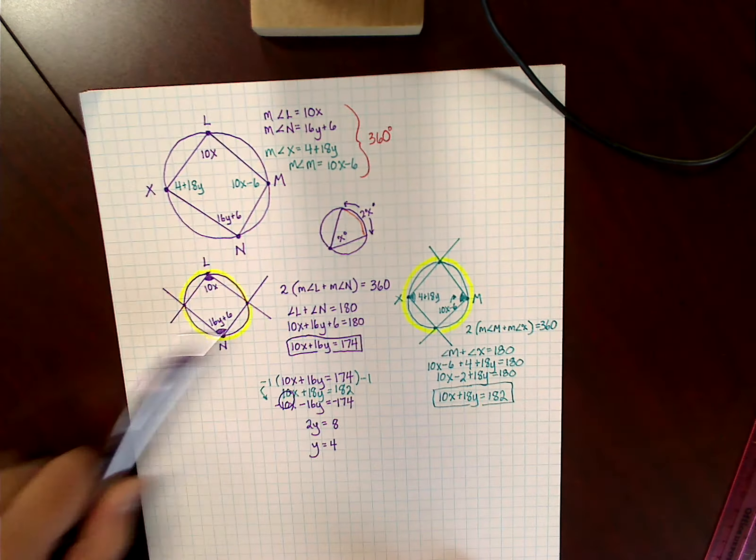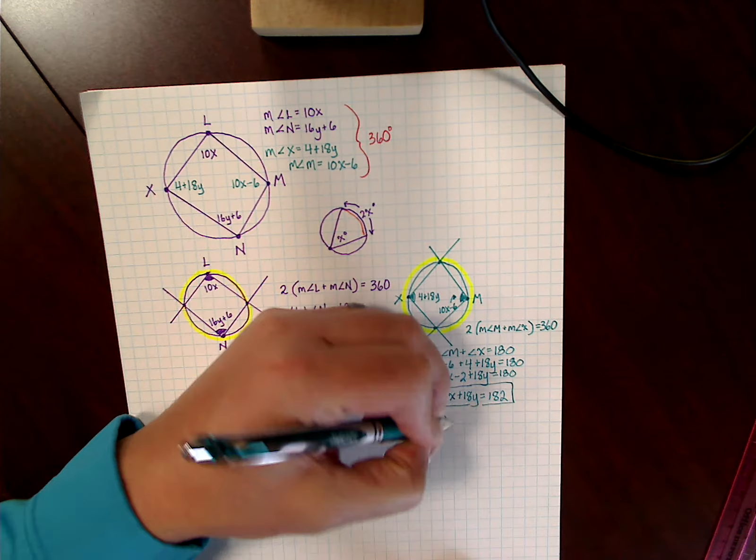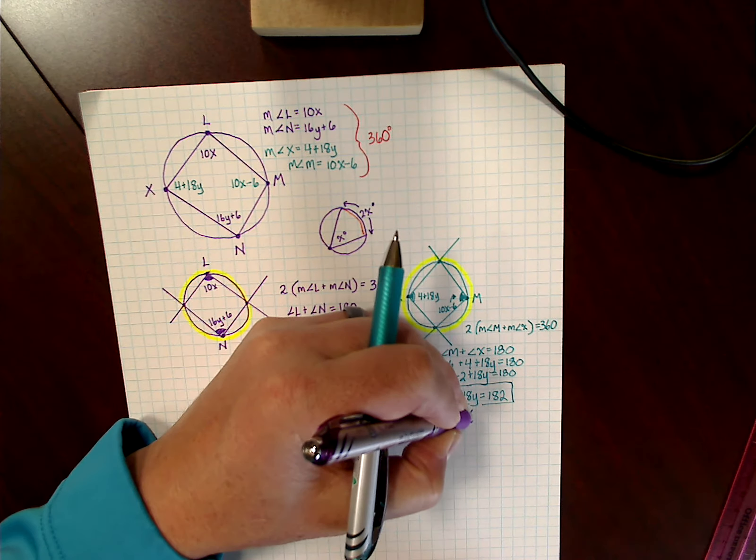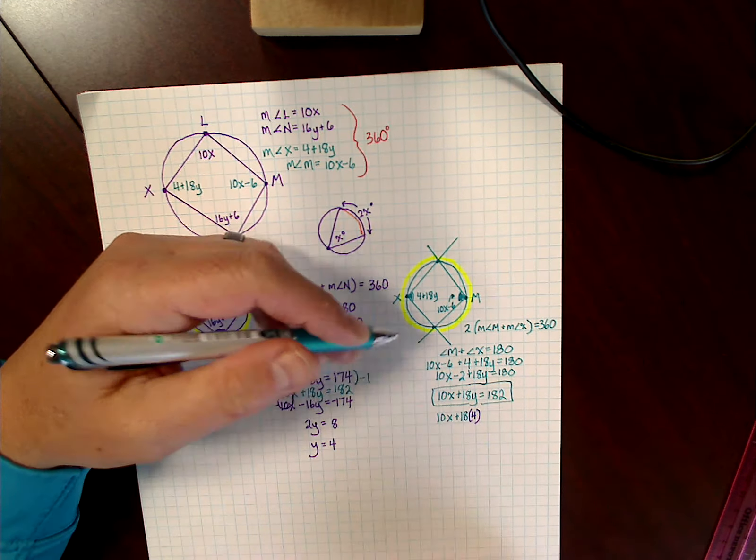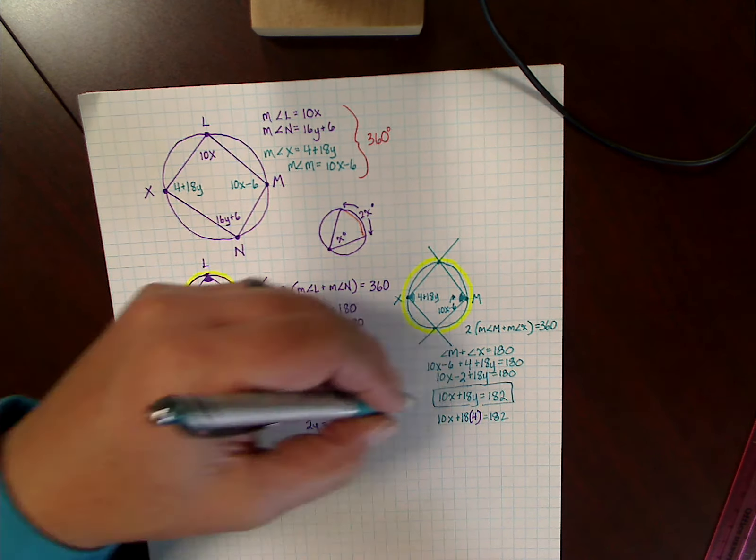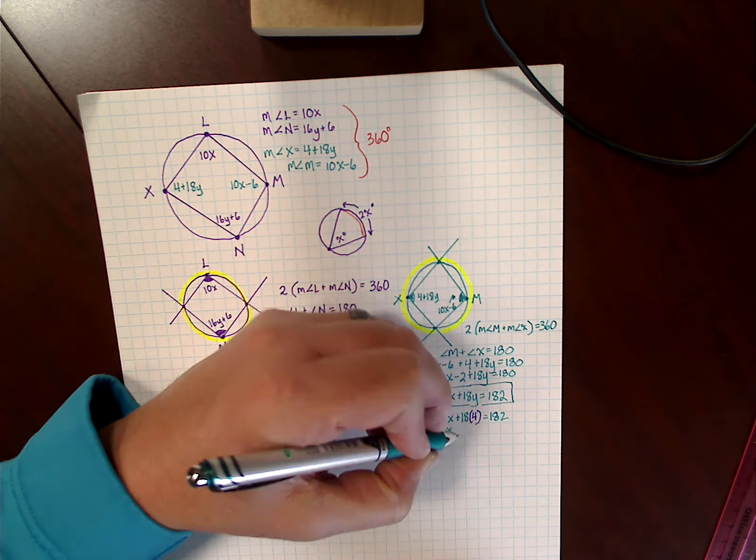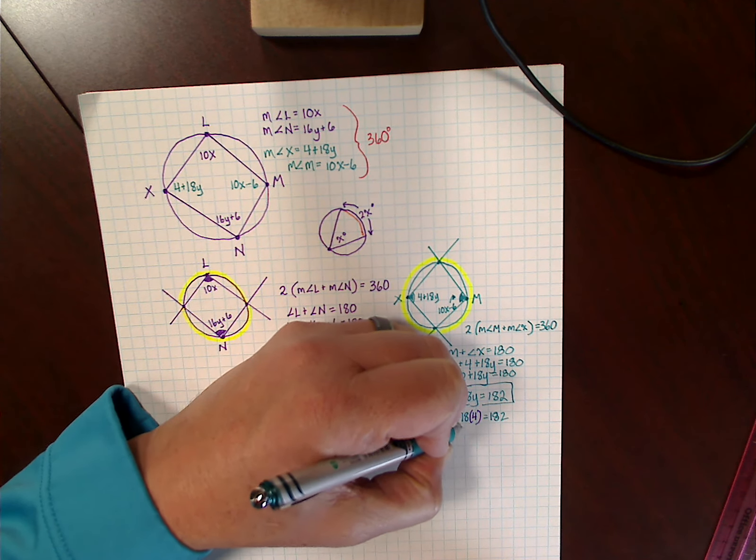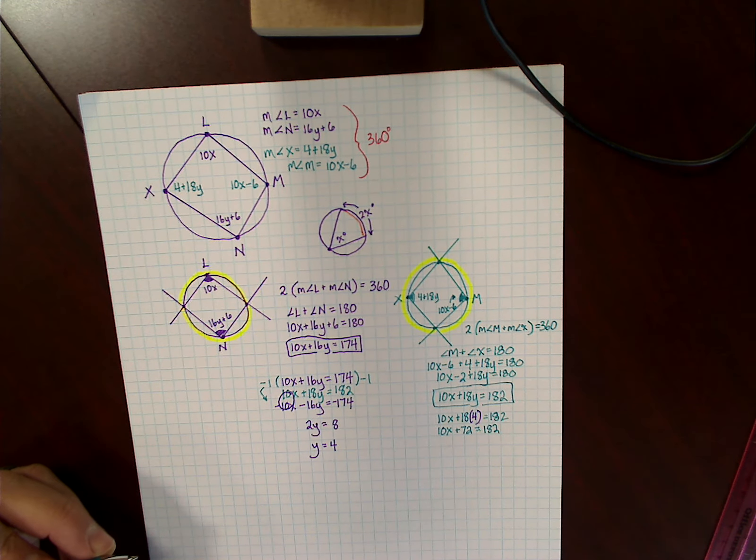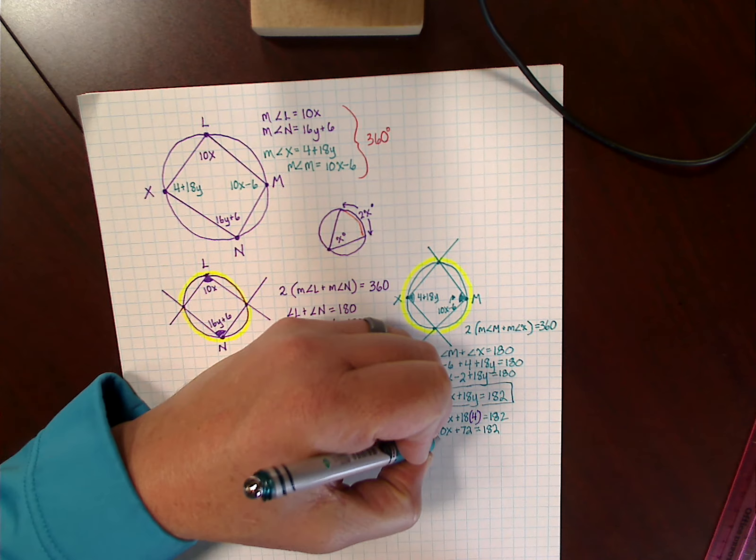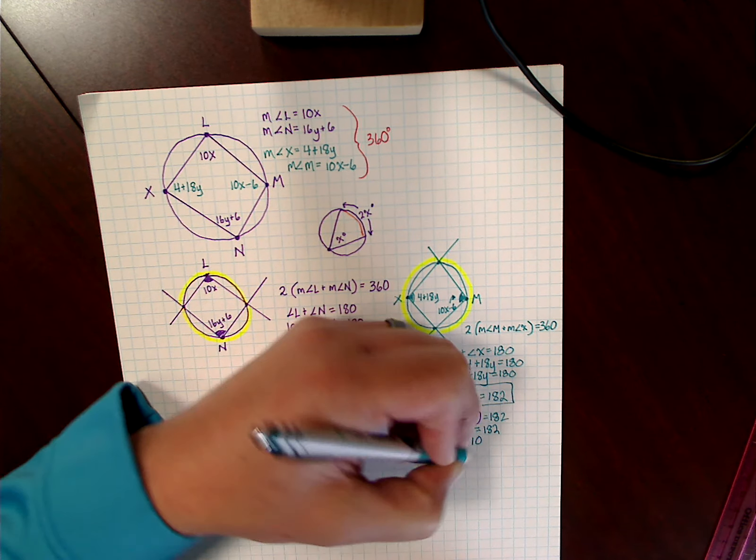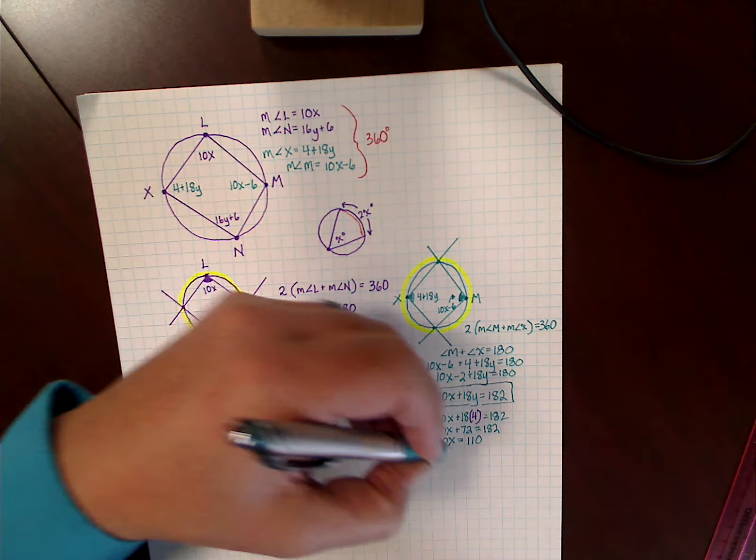Then I could substitute that 4 in for any y value that I see. So since there's room over here, let's just go ahead and put it in. So I have my 10x plus 18. Now I'm going to put, instead of y, I'm going to put a 4 in there. So I'm just exchanging, replacing. Equals 182. So this is still 10x. 18 times 4 is 72, equals 182. Subtract 72 from both sides. 10x equals 110.